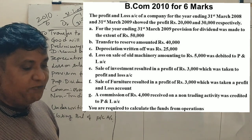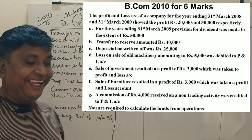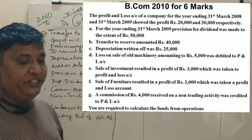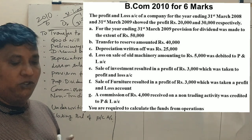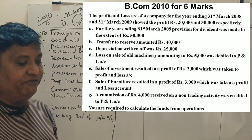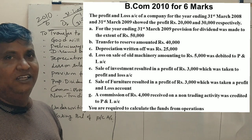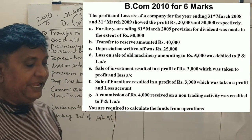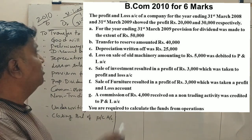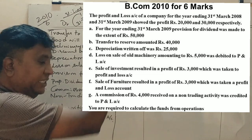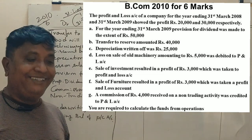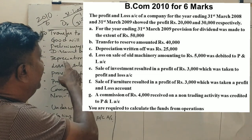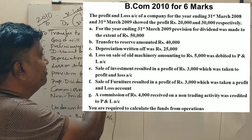Next point: for the year ending 31st March 2009, provision for dividend was made to the extent of Rs. 50,000 — that means proposed dividend. Transfer to reserve is Rs. 40,000. Depreciation written off was Rs. 25,000.